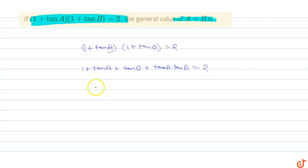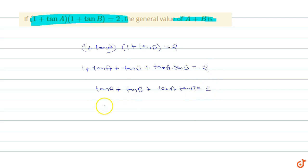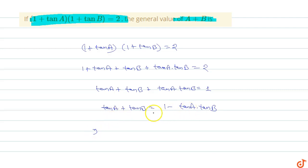Equals 2, so cancelling the 1, we get tan a + tan b + tan a · tan b equals 1. So tan a + tan b equals 1 minus tan a · tan b.